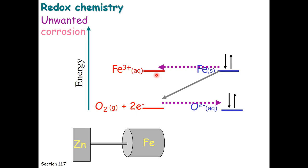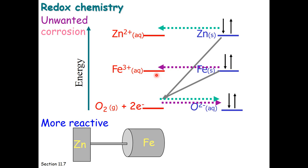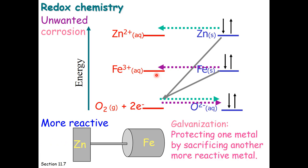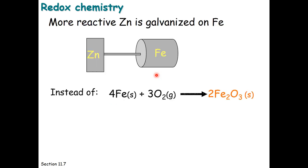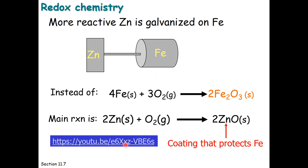We can coat iron with zinc. Zinc is more reactive than iron. So if we have a zinc coating on the outside of our iron, the zinc will react with the oxygen to make zinc 2+ and oxide, and this will form a passivating layer. This process is called galvanization, protecting one metal by sacrificing another, more reactive metal. Perhaps you've heard of galvanized steel. This is steel coated with zinc so that when oxidation occurs, we form a nice zinc oxide layer that doesn't disturb the integrity of the iron. Maybe you've heard of chrome plating. Same thing. So our more reactive zinc is galvanized onto the iron. So instead of the process of iron rusting, we get zinc turning into zinc oxide. That zinc oxide is the coating that protects the iron. Here's a little video to show you how this looks.